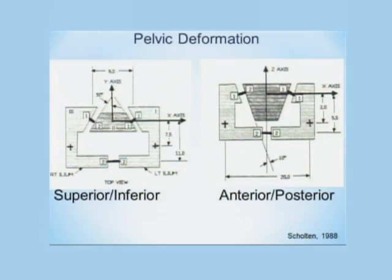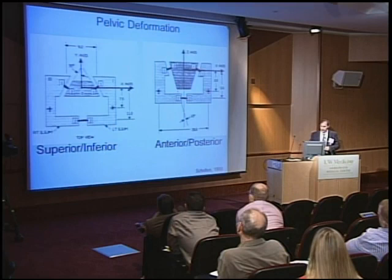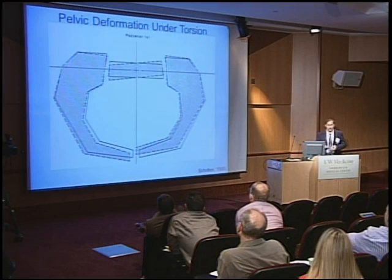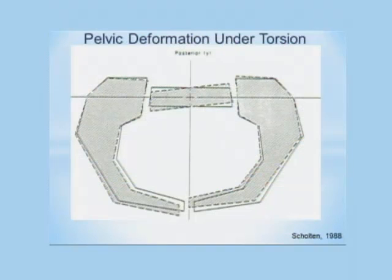The pelvis is a very interesting structure as well, and mechanically consists of three components: the two ilium and the sacrum. They're fairly tightly bound, but they do have motion. These are some models done by Scholten to give an overview of where the motion occurs in the pelvis. When a torque is applied — for example, in walking where your pelvis undergoes some torsion — you see some motion in the sacroiliac joints and a lot in the symphysis pubis.